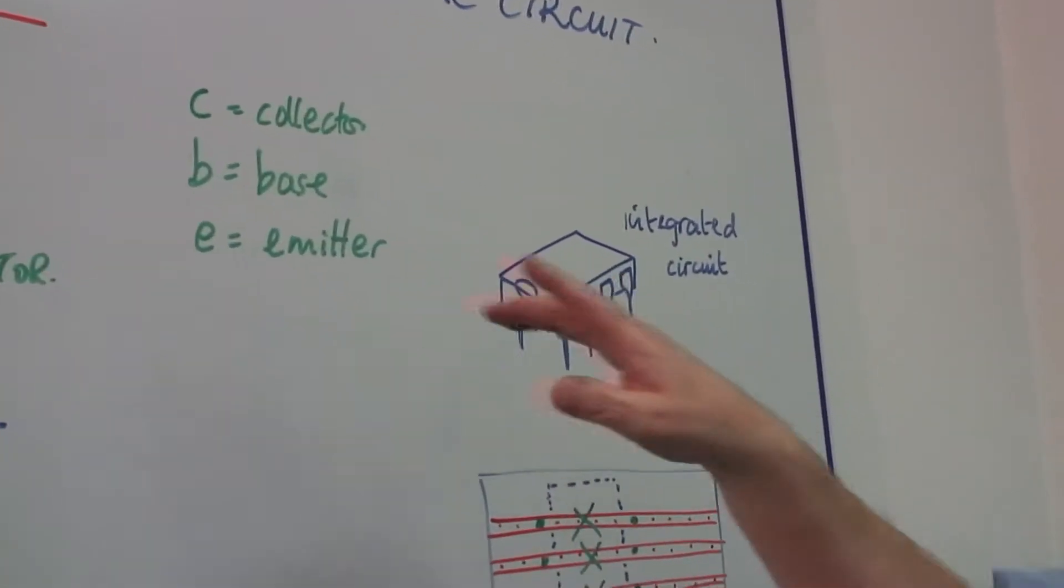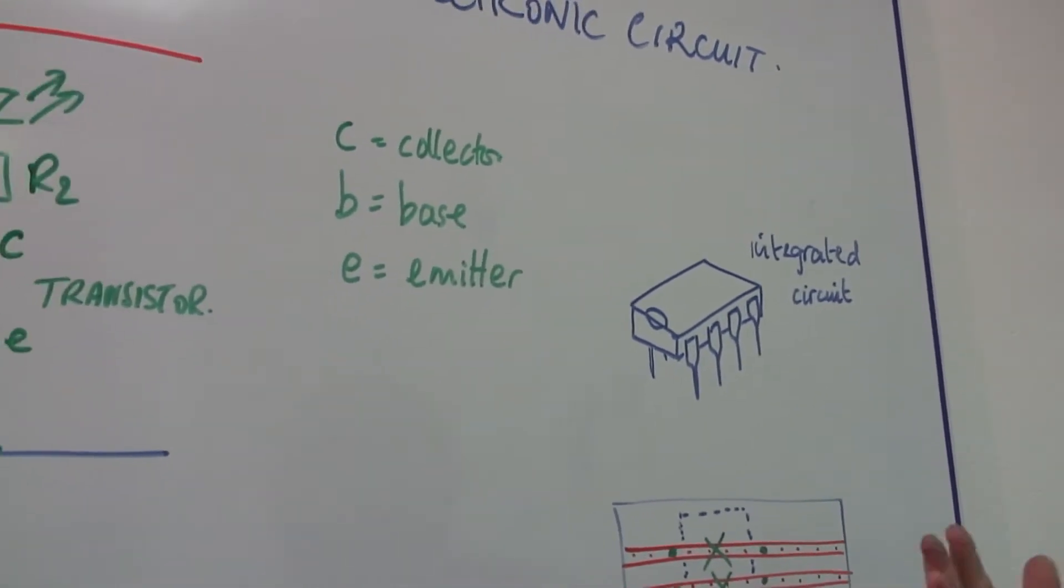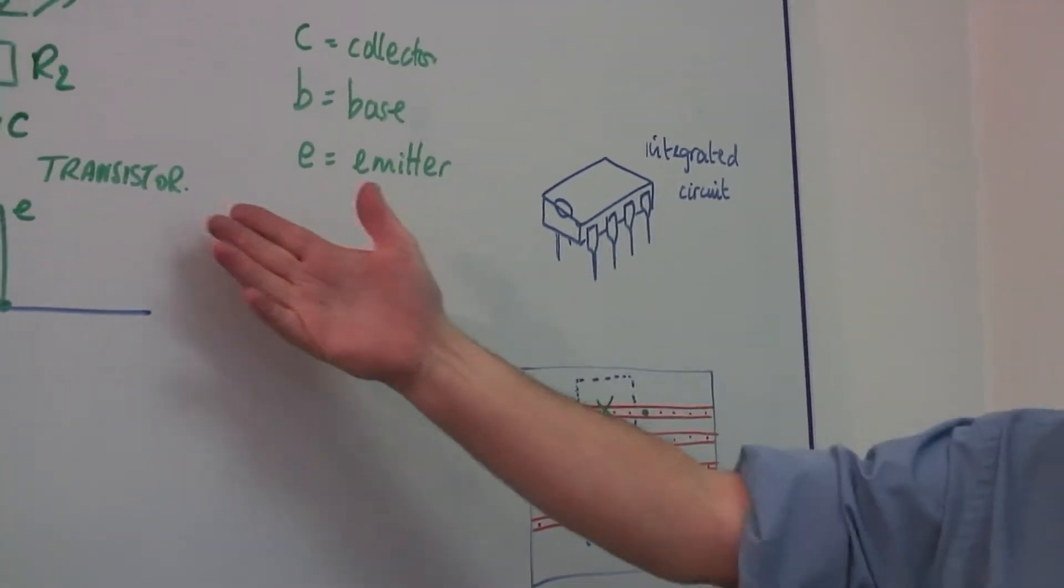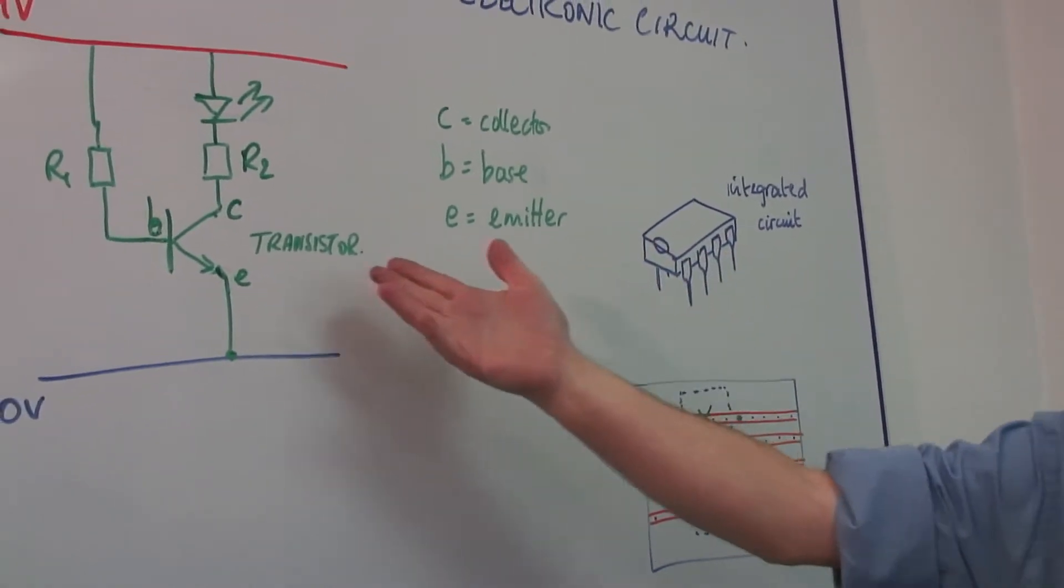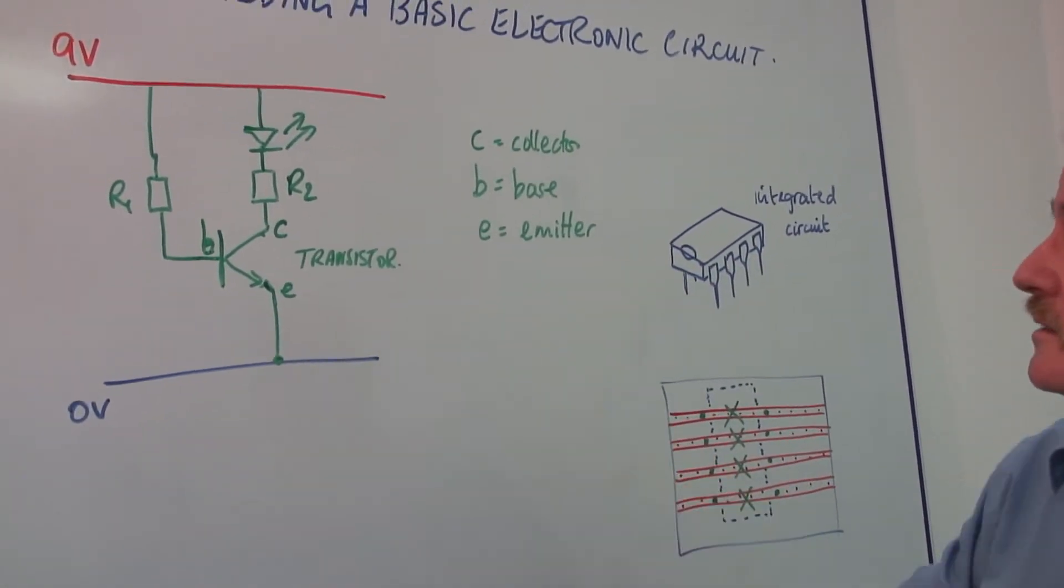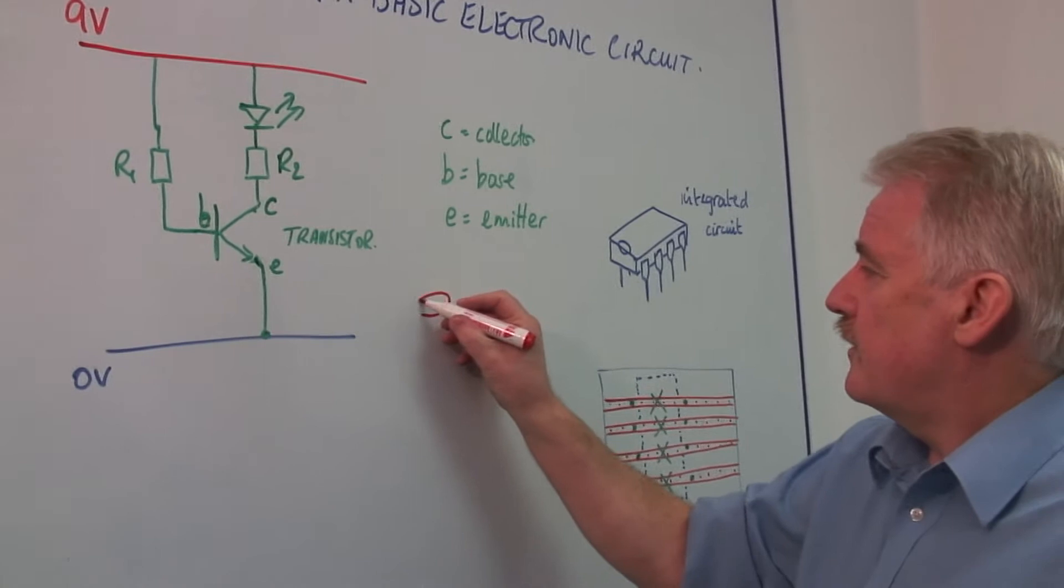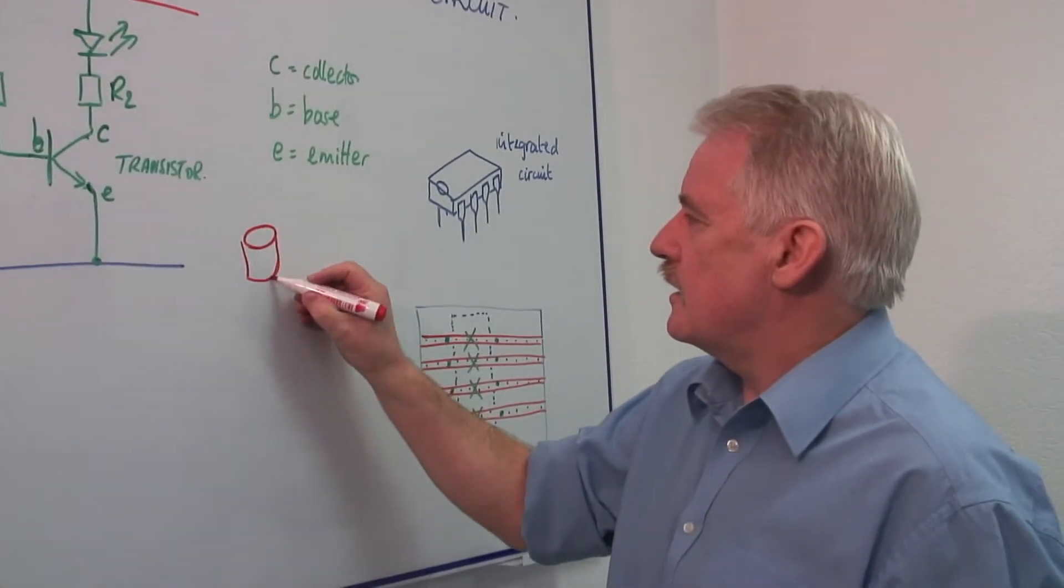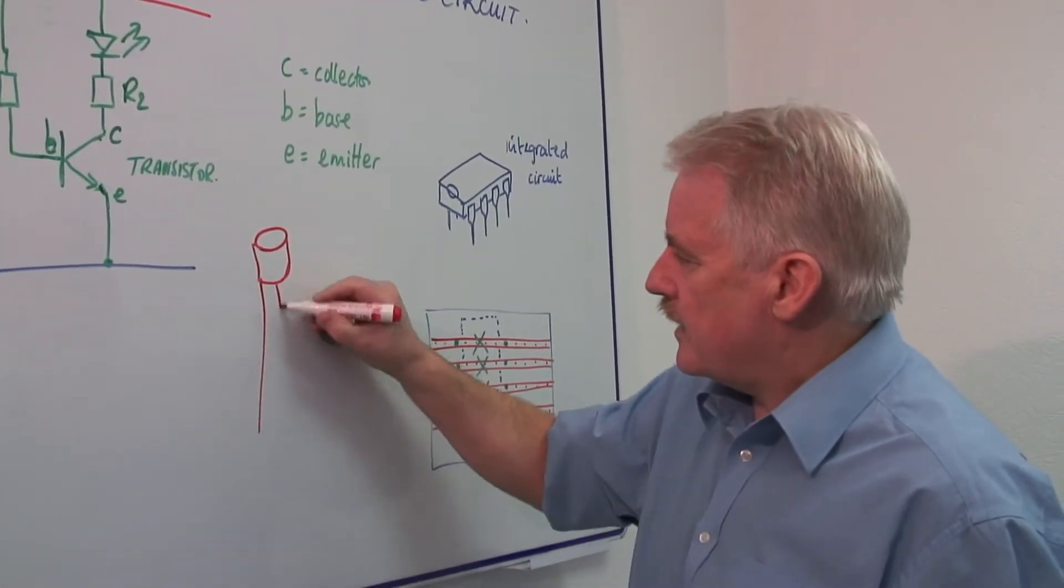The difference between the two is nothing. It's the packaging. The transistor is an operating device and is normally, if it's on its own, in a little compact package like this,